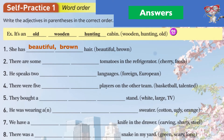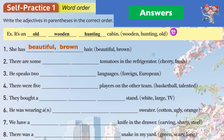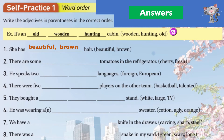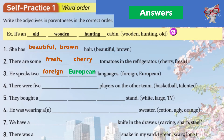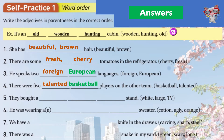If Yonghee gets all eight correct she gets eight imaginary fish — real fish! Number two: there are some fresh cherry tomatoes in the refrigerator. Number three: he speaks two foreign European languages. Number four: there are five talented basketball players on the other team — because 'basketball players' is a compound noun; you can't say 'he is basketball.'